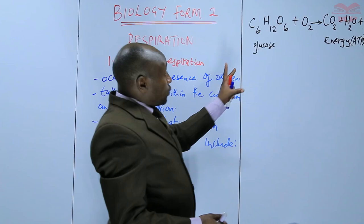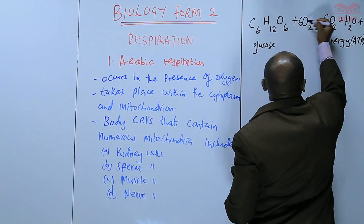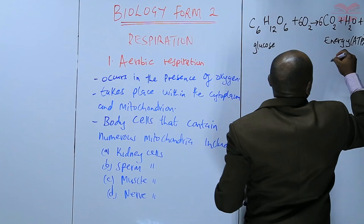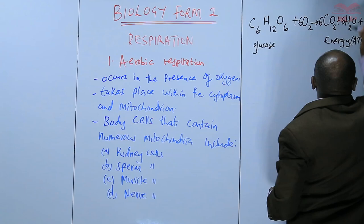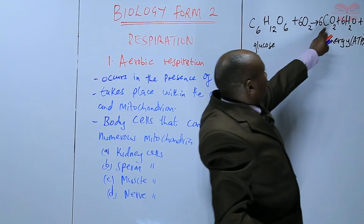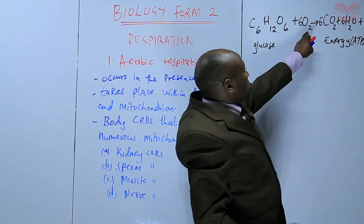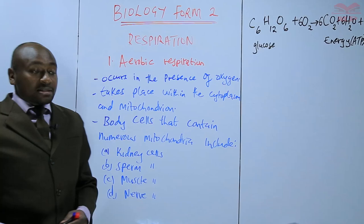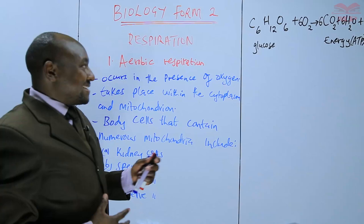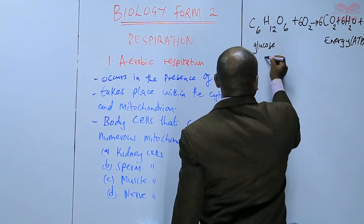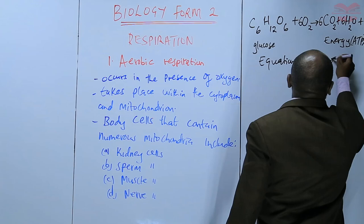To make sure that the equation is balanced, we put a 6 in front of O2, a 6 in front of CO2, and a 6 in front of water. So the equation is balanced — we have 6 carbons, 12 hydrogens, and 18 oxygens on each side. That equation is the summary equation for aerobic respiration.